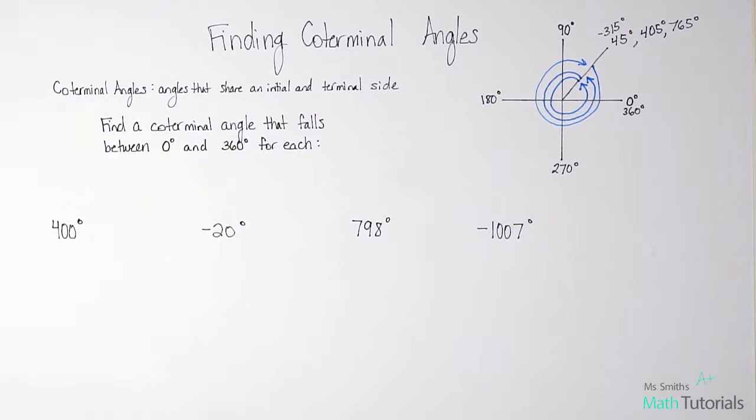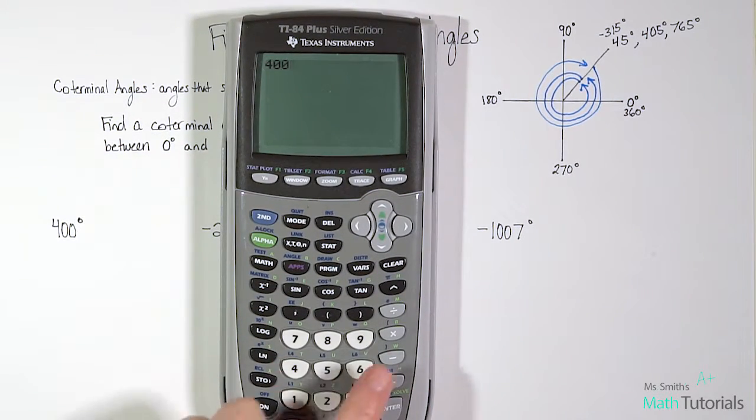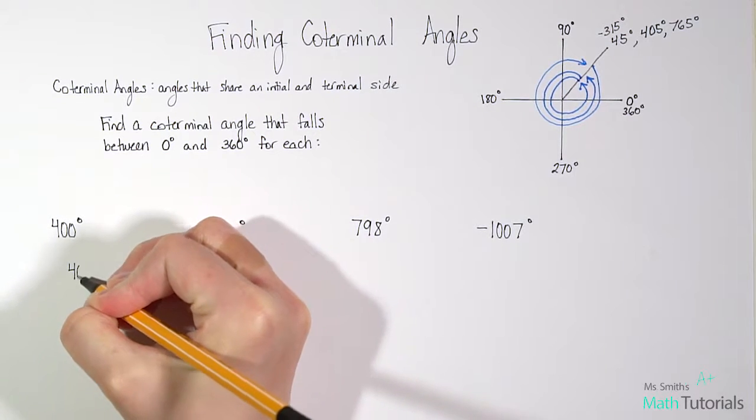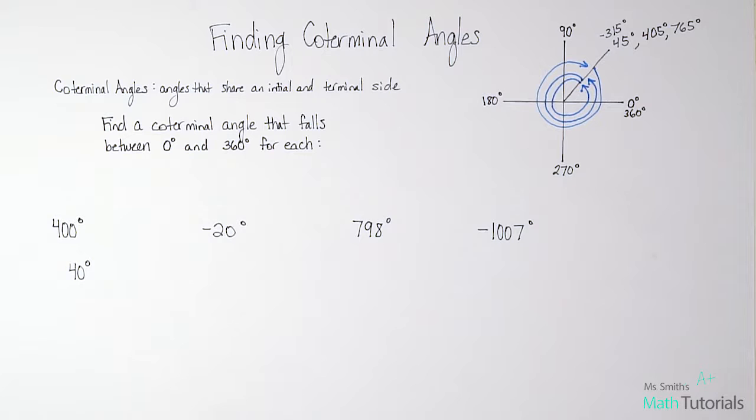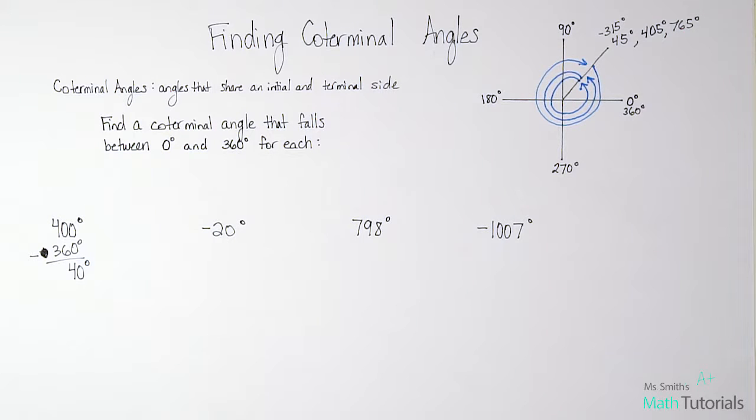So for example, in this first one, we're given 400 degrees. And we want to know what would be a coterminal angle, but it has to fall between zero degrees and 360 degrees. Well, obviously 400 degrees is bigger than 360. In that case, what we need to do is take our degree of 400 and subtract 360. So in this case, our coterminal angle would be 40. It falls between zero and 360 degrees and it is coterminal with 400 degrees. So all we did was we subtracted 360 to get 40 degrees.